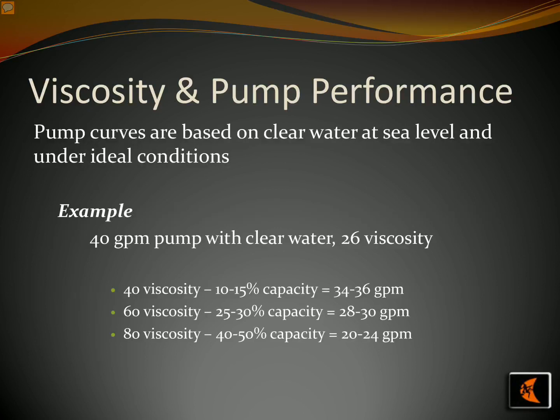Pumping bentonite slurry requires an understanding of viscosity for successful pump performance. Pump curves are designed based on sea level conditions with clear water. Viscosity often affects the capacity and power output: pumping 40 gallons per minute with a material of 26 viscosity likely produces an output of 34 to 36 gallons per minute. The same material at a viscosity of 40 is likely to produce 28 to 30 gallons per minute, while a viscosity of 80 yields an output of 20 to 24 gallons per minute. Keeping viscosity within an appropriate range is important for good pump performance.